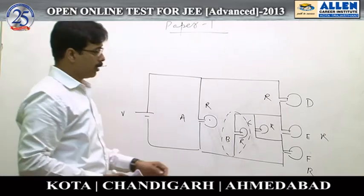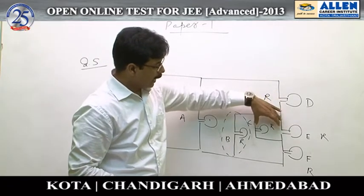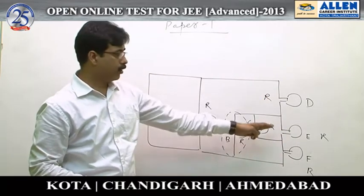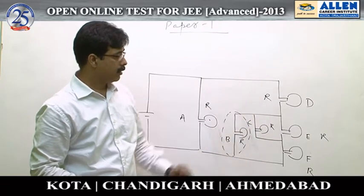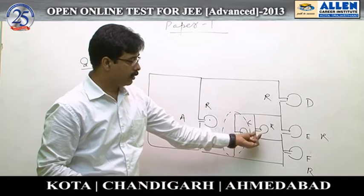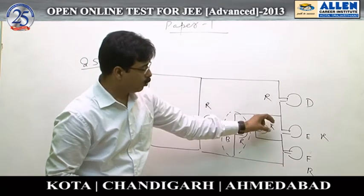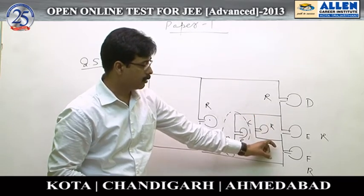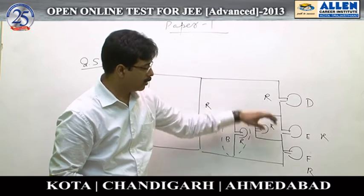Now we compare bulbs E, C, and F. E and C are in parallel, they have the same potential difference, so they must have the same brightness. The equivalent of E and C is R/2 and bulb F has resistance R. So R/2 has a naturally smaller potential difference and F has a larger potential difference. Therefore F should be brighter than E and C.